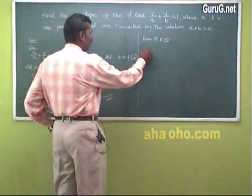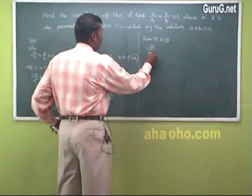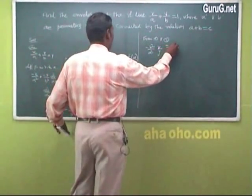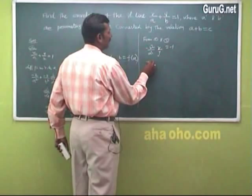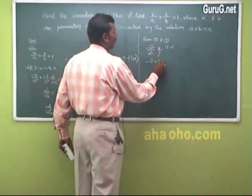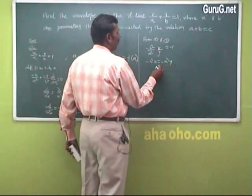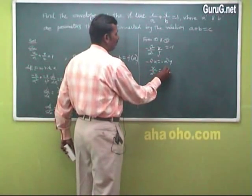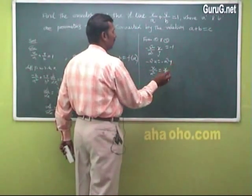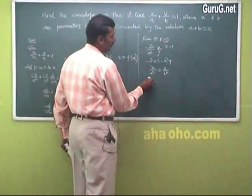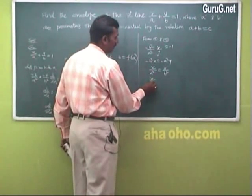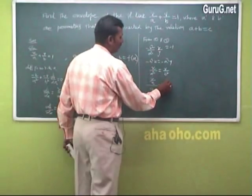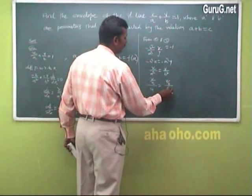So minus b²/a² · x/y = minus 1. Cross multiplying: minus b²x = minus a²y, which gives x/a² = y/b². So x/a divided by a equals y/b divided by b.